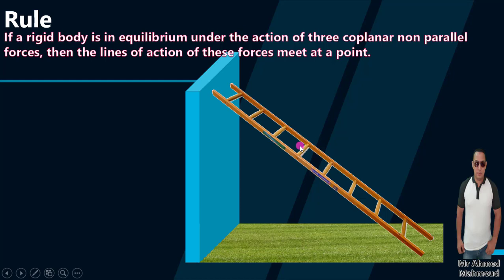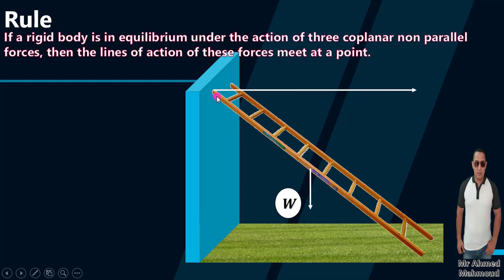The ladder is in equilibrium under three forces. The first force is the reaction of the smooth wall — the reaction of the wall is always perpendicular to the wall, so the reaction R1 is perpendicular. The weight of the ladder acts at the midpoint of the ladder, because it is a uniform ladder.